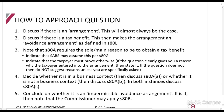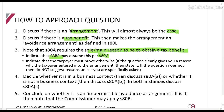Here is how you approach this as an exam question. First, discuss that there is an arrangement — any transaction or agreement basically qualifies. Then discuss whether there is a tax benefit: what should the tax be, and what is the tax? You can then indicate that per Section 80G, SARS can assume the sole or main reason is to obtain a tax benefit, which is a problem, and the taxpayer must prove otherwise. Then indicate whether it is a business or non-business context, discuss that, and in all situations also discuss Section 80C. Then conclude. As long as you go through this process and write it all down, since all required information will be provided, you should be able to pass that question.